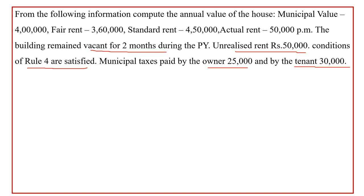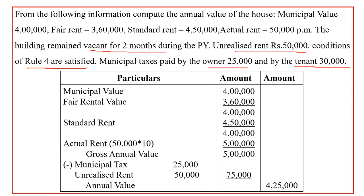As usual, we start our answer with municipal value, which is 4 lakhs. Fair rental value is 3 lakhs 60,000. Compare and take the highest value — the answer is 4 lakhs. Then compare it with standard rent, which is given in the question. Take the lowest value — the answer is 4 lakhs. With that, we have to compare actual rent. Since in this problem we have vacancy, the actual rent calculation will be different.